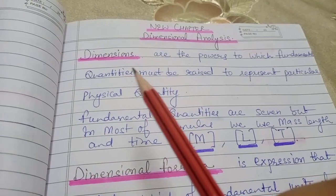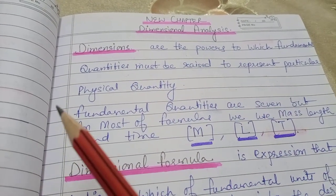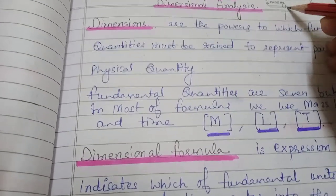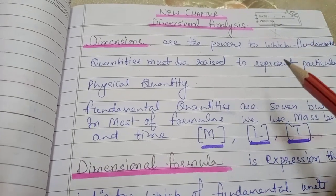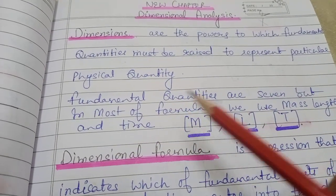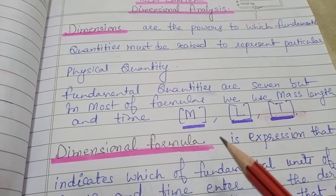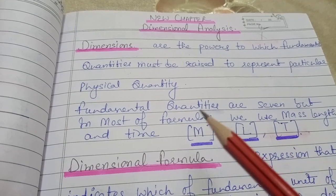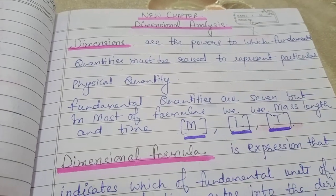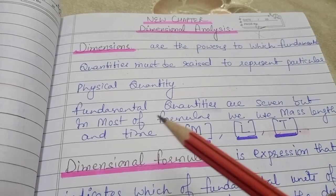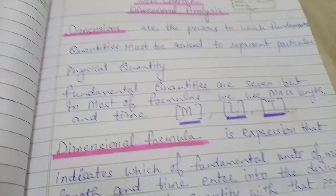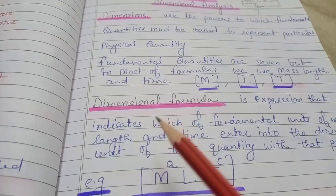What are dimensions? Dimensions का main मतलब है power. जैसे हम X के ऊपर कोई power लगाते हैं, वो power उसकी dimension कहलाती है। Powers यहाँ fundamental quantities के ऊपर लगाते हैं। Fundamental quantities आपने पिछले chapter में पढ़ा था — 7 हैं। लेकिन dimensional formulas में हम 3 को बार-बार use करेंगे: Mass, Length, और Time। इन्हीं M, L, T की form में सारी physical quantities को लिखेंगे। M की कितनी power है, L की कितनी power है, T की कितनी power है — उसको dimensions बोलते हैं।